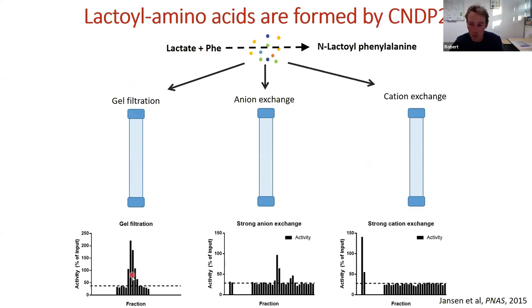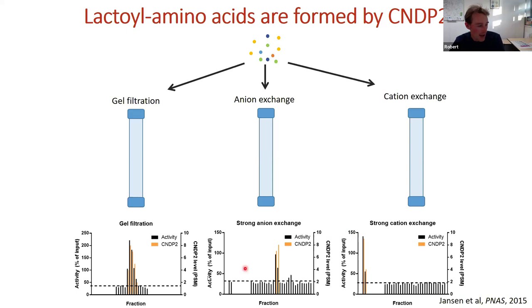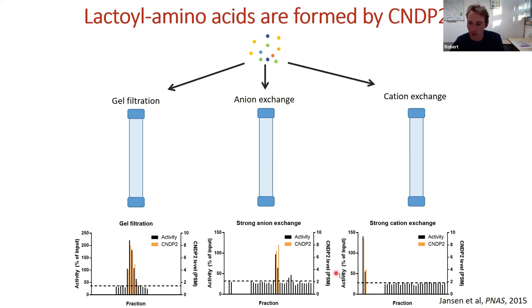Activity assays on fractions showed activity in some but not all. We then did shotgun proteomics on active and non-active fractions. Even though fractions contained between 100 and 600 proteins each, we were able to deconvolute them — only a single protein was present in all active fractions and absent from non-active ones: CNDP2. Unfortunately, this was an unannotated peptidase, so we essentially lost the trail again.